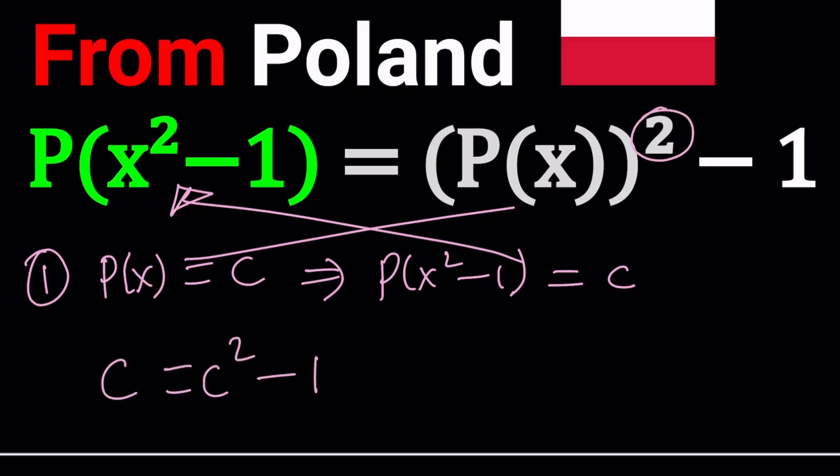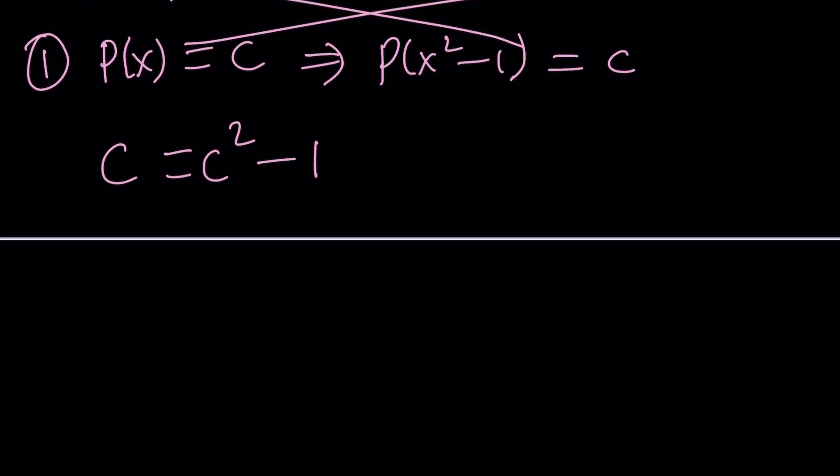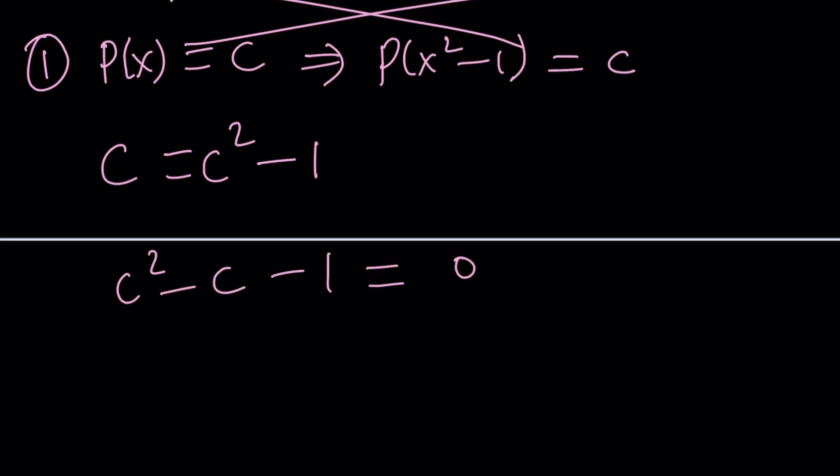Notice that p of x is squared. And then from here we'll get a quadratic equation, which can be easily solved. And the roots are going to be probably familiar to you somewhat if you know about Fibonacci sequence, the golden ratio, the golden rectangles, so on and so forth. Basically, the values are going to be 1 plus minus the square root of 5 divided by 2.